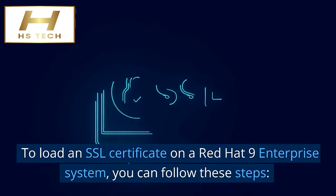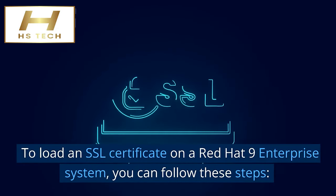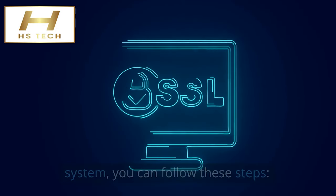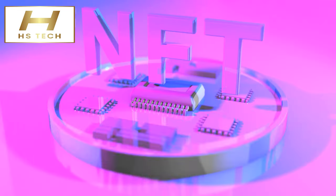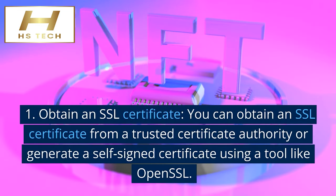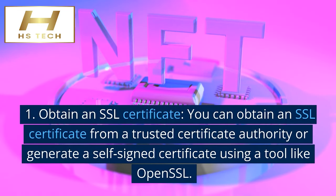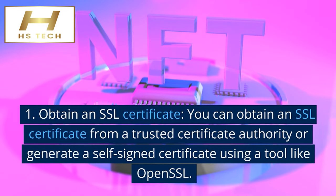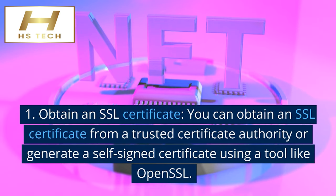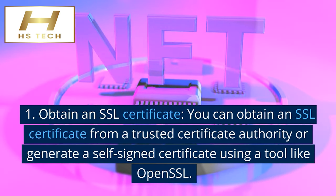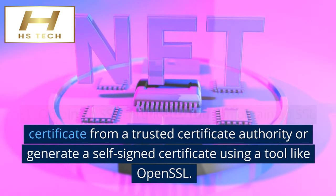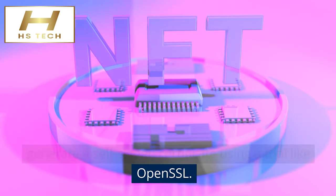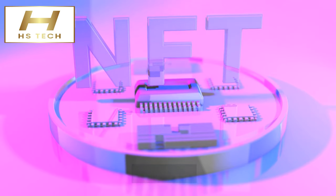To load an SSL certificate on a Red Hat 9 Enterprise system, you can follow these steps. Step 1: Obtain an SSL Certificate. You can obtain an SSL certificate from a trusted certificate authority, or generate a self-signed certificate using a tool like OpenSSL.